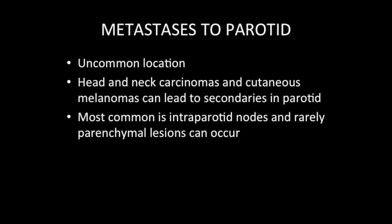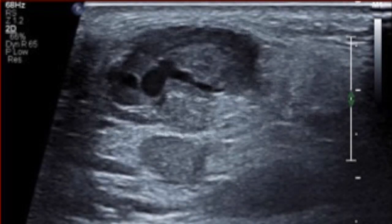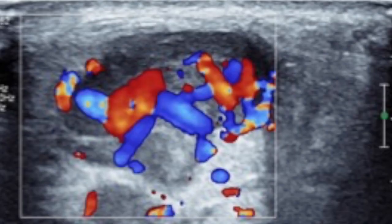Regarding metastasis — yes, metastasis does occur in the parotid. The parotid is a site where head, face, and neck region malignancies can metastasize. Melanoma can metastasize to the parotid. Here is a rare case where a renal cell carcinoma had post-surgical recurrence, showing parotid intralesional lymph nodes with marked vascularity on Doppler — proved to be renal cell carcinoma metastasis in the parotid gland.